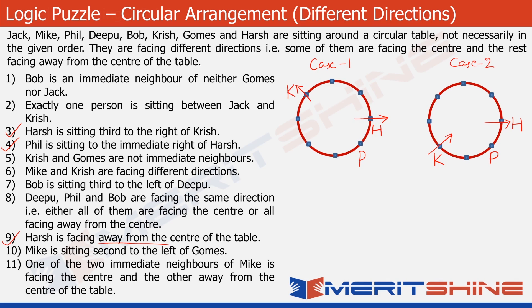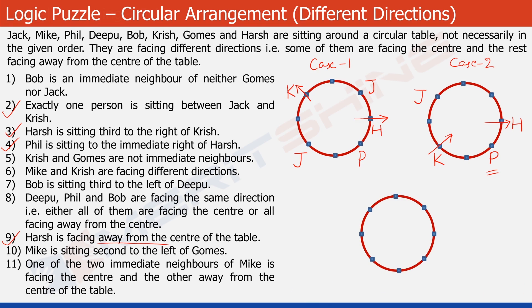Whatever we do from now on, we'll have to apply changes to both cases simultaneously. Look at statement 2: exactly one person is sitting between Jack and Krish. In Case 2, there is only one possibility for Jack, since the other adjacent position is occupied by Phil. But in Case 1, there are two possibilities for Jack. So let's make another case — Case 3 — which takes the second Jack position from Case 1. Now we have three parallel cases.